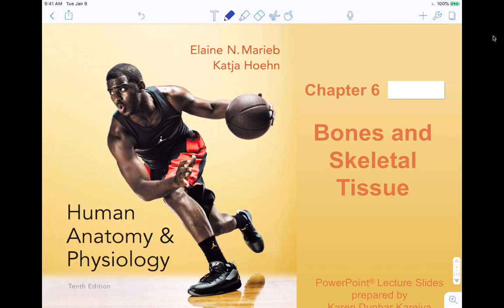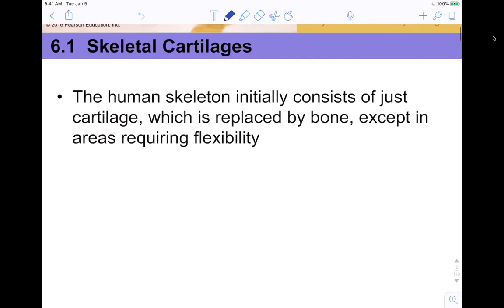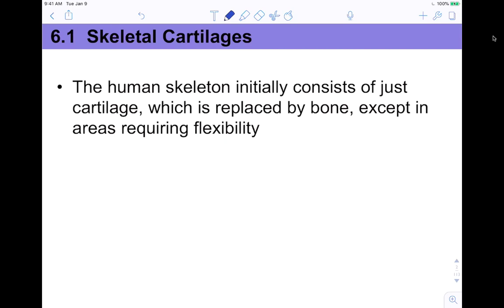Hey guys, welcome back. It's Ms. Huber. Today we're going to be talking about chapter six for anatomy and physiology — bones and skeletal tissues. We briefly talked about these in chapter four, but we're going to build on all of that as this course is designed to do. My dogs are in the background chewing on bones, so I apologize for those noises, but we're just going to get through this.